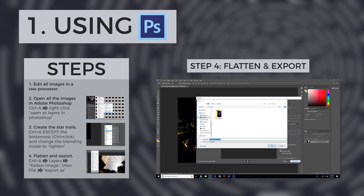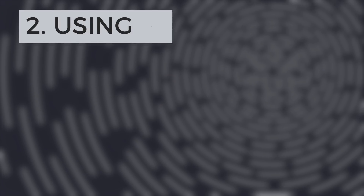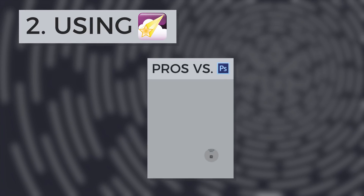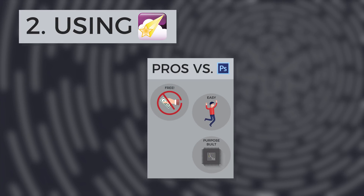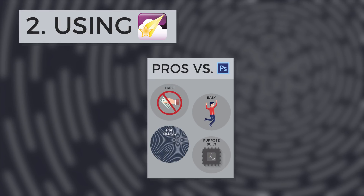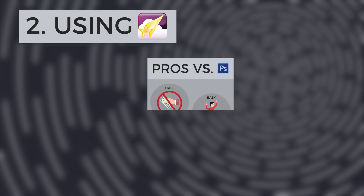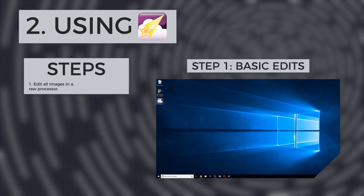An alternate method to Photoshop is to use StarStacks, a powerful yet simple way to stack exposures. It's purpose-built for star trails, costs nothing, and features a blending mode called Gap Filling, which will fill in star trail gaps from the intervals between exposures.